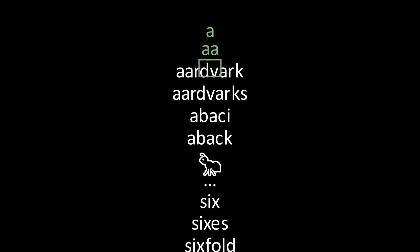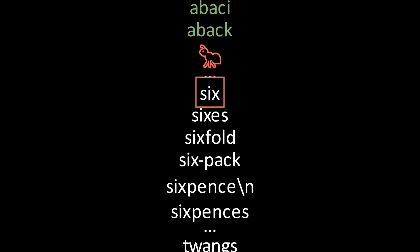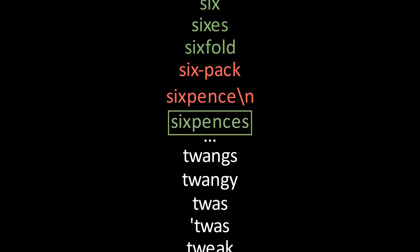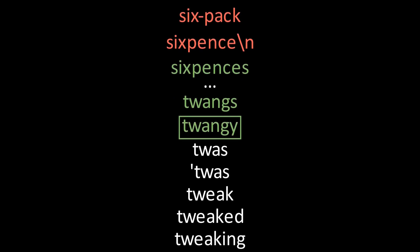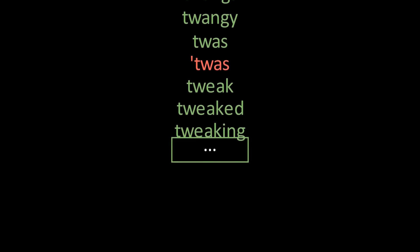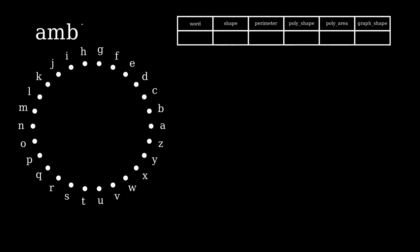First, we need a word list to work with. The one that I'm using contains about 100,000 words, but many of those contain characters that can't be mapped to the letter wheel. We'll first run through the word list and sanitize it, removing all words that contain characters outside of the A to Z character set. Then we need to make a database to store the word shapes. I'm using SQLite.